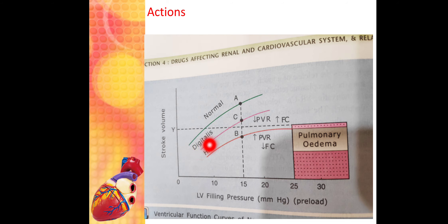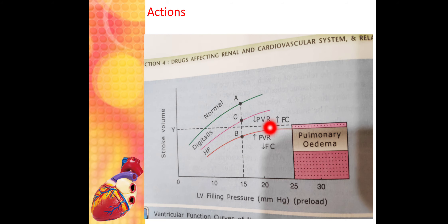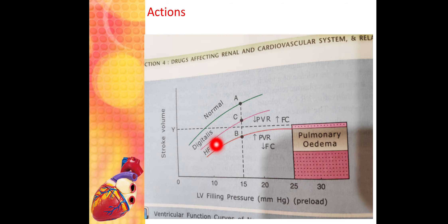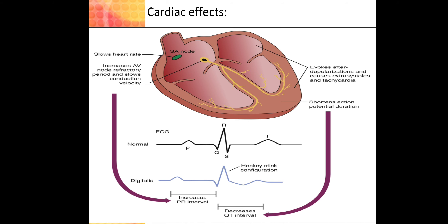When we give digitalis or digoxin, it increases the force of contraction, which raises stroke volume and normalizes cardiac output. This shifts the heart failure curve upward toward the normal curve. The y-line represents the minimum cardiac output required for proper function, and digoxin compensates by shifting the curve from the heart failure level back toward normal.